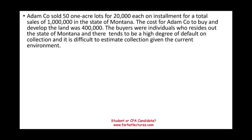Adam Company sold 50 one-acre lots for $20,000 each on installment, for total sales of $1,000,000 in the state of Montana. The cost for Adam to buy and develop the land was $400,000, so Adam is making $600,000 profit on this deal. The buyers were individuals residing out of state, and there is a high degree of default on collection — it is difficult to estimate collectability given the current environment. So Adam sold the land on installment, but we don't know who is or isn't going to pay.